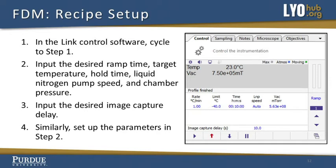Input the desired image capture delay. Images are compiled into a video file at the end of run. The chosen delay will be based on the desired temperature resolution. For example, a 12 second delay with 1 C per minute temperature ramp will produce an image every 0.2 C of temperature change. Similarly, set up the parameters in step 2.